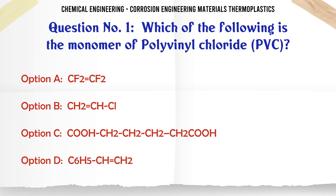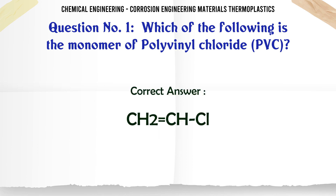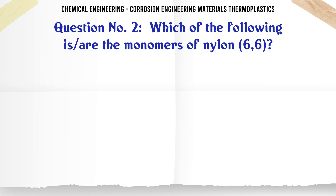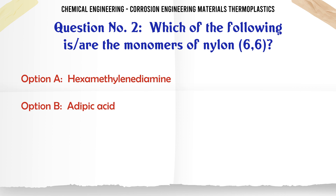D. C6H5CHCH2. The correct answer is CH2CHCl. Which of the following is/are the monomers of Nylon-6-6?